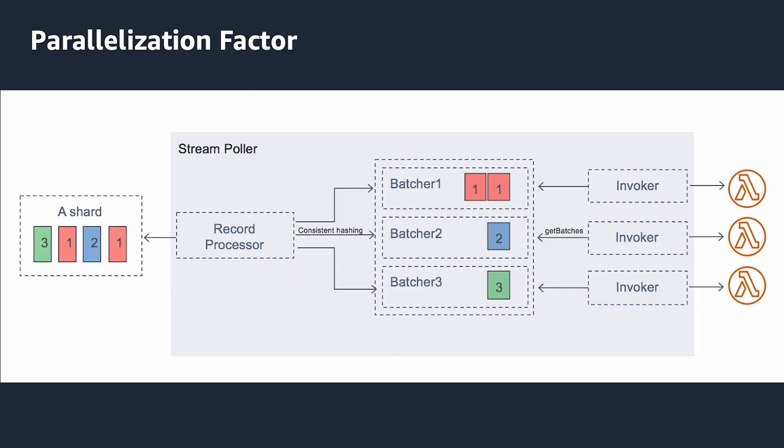When working with the parallelization factor, you need to define how many batches to process concurrently per shard. The default is 1, but you can go up to 10. For example, a factor of 2 allows you to have a Kinesis Data Stream with 100 shards and have 200 concurrent Lambda invocations.